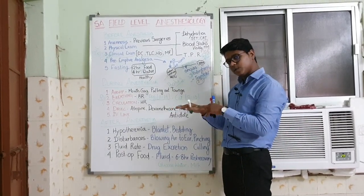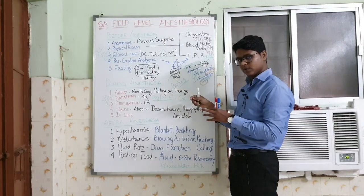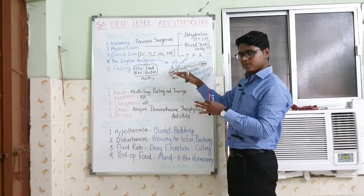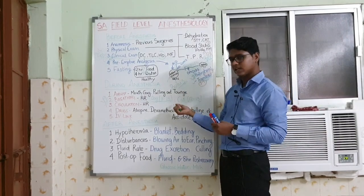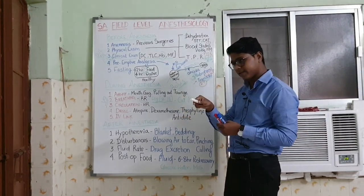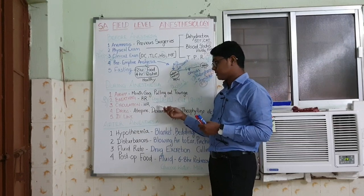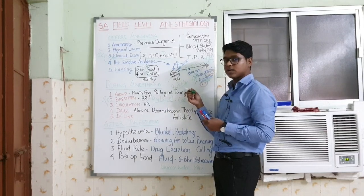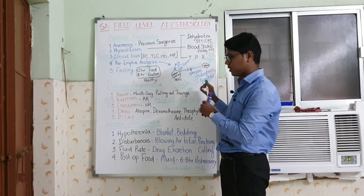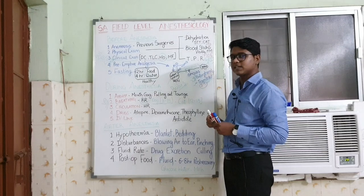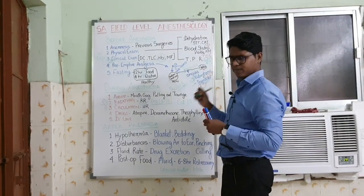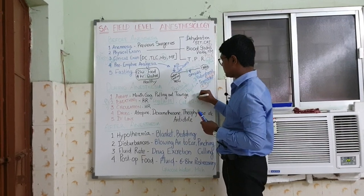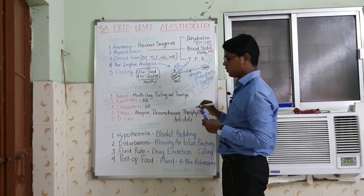When the animal changes from a deep plane to a lighter plane, it will take a long gasp and then breathing will become slightly faster. That is the sign that it is time for giving the bolus administration of ketamine. Besides breathing changes, head and tail movement are also signs that tell you it is time for additional bolus ketamine.